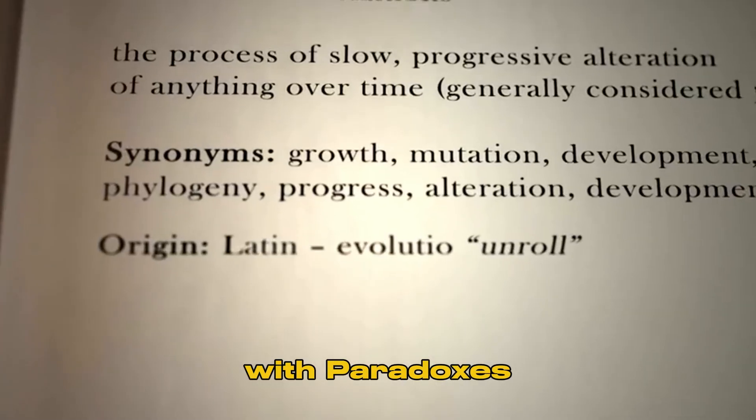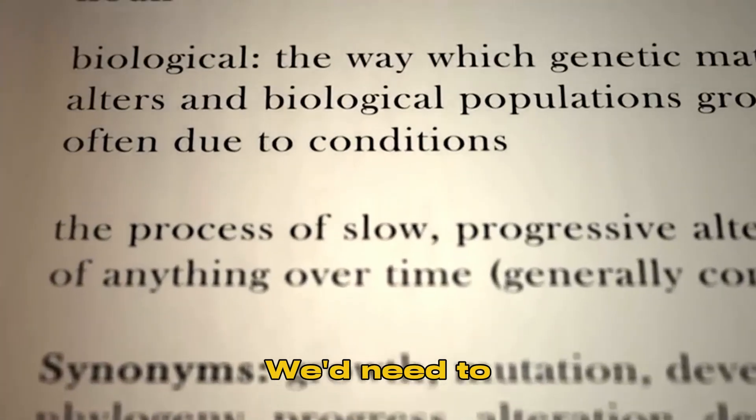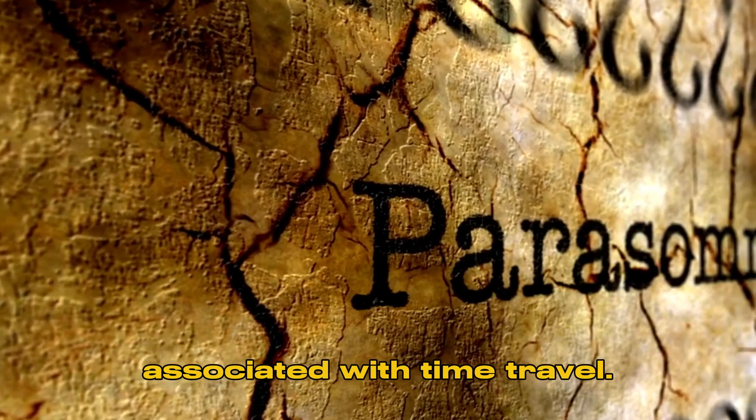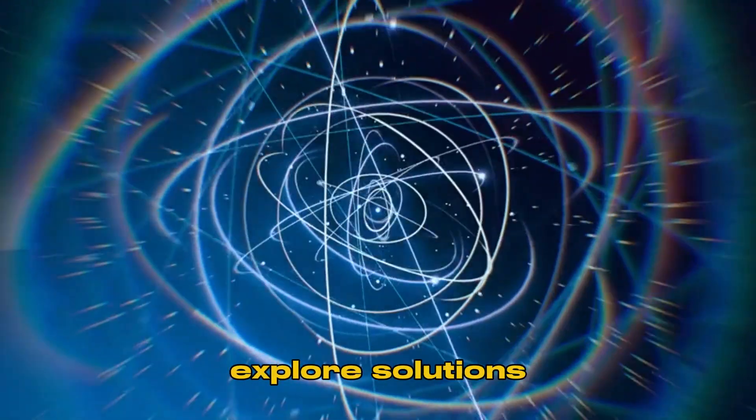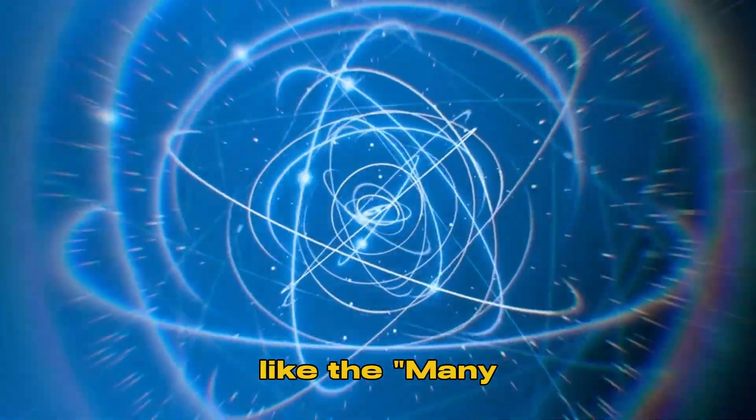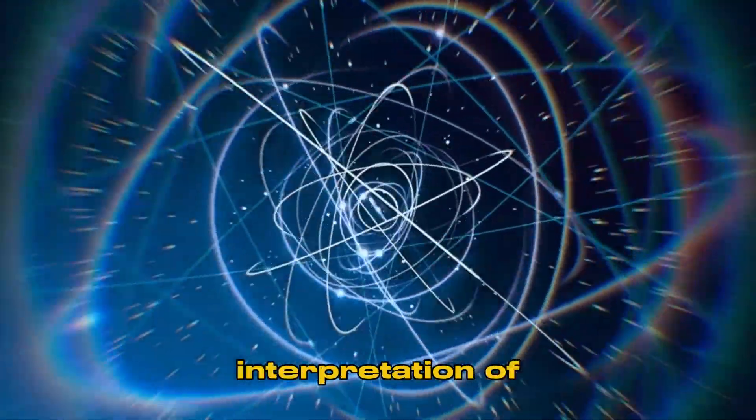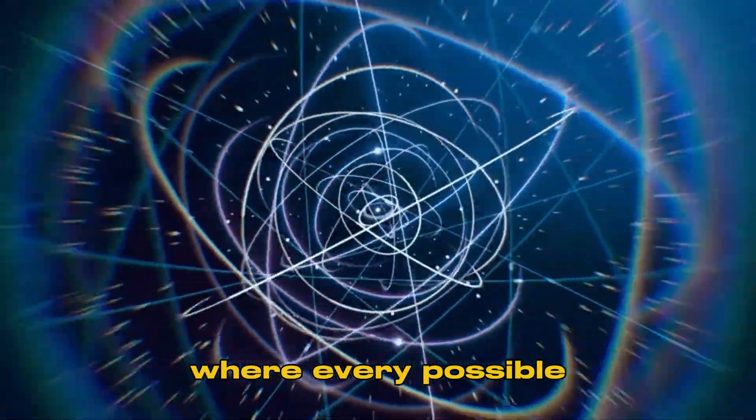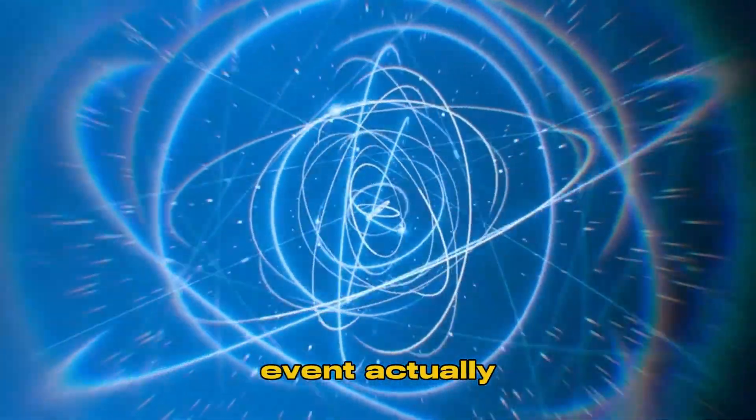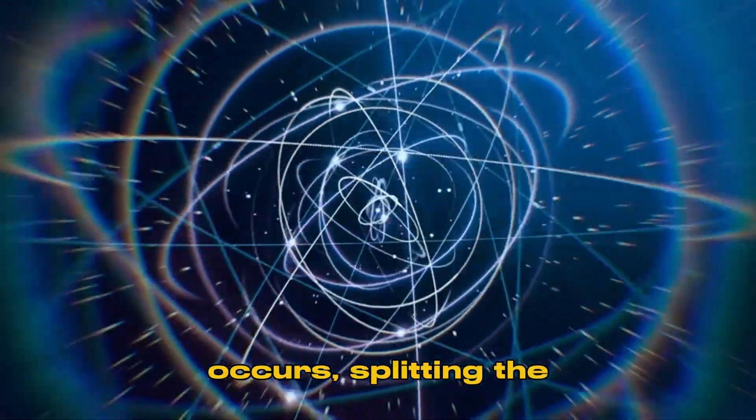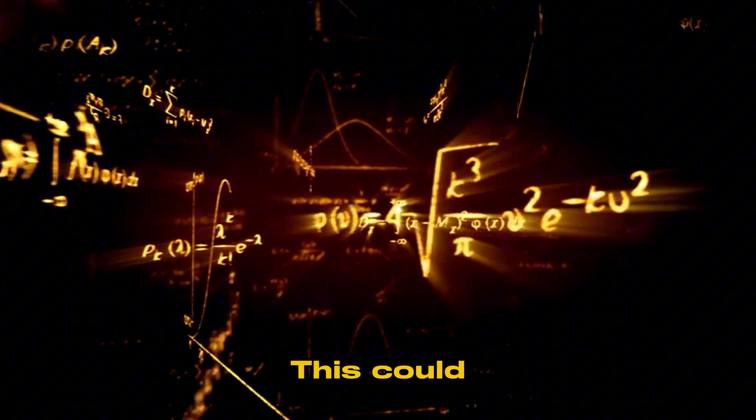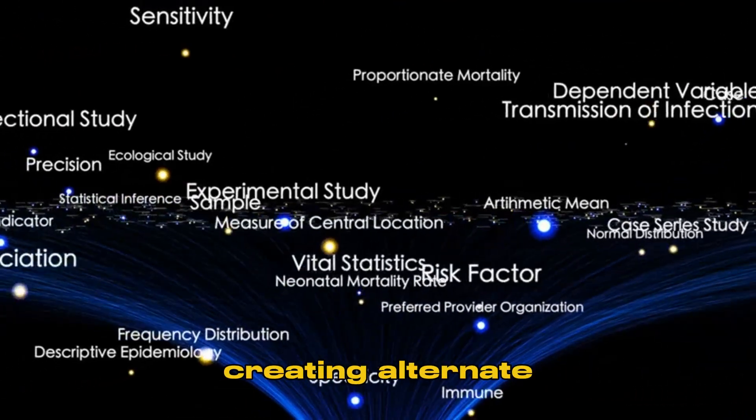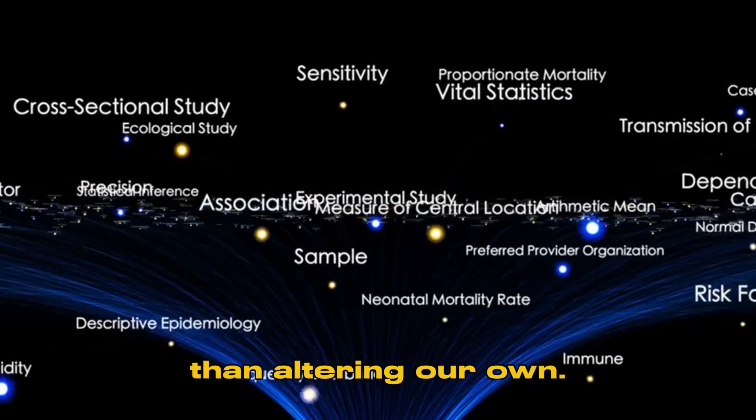Step 4: Dealing with paradoxes. We'd need to address the paradoxes associated with time travel. Perhaps we could explore solutions like the many worlds interpretation of quantum mechanics, where every possible outcome of a quantum event actually occurs, splitting the universe into multiple branches. This could theoretically avoid paradoxes by creating alternate timelines, rather than altering our own.